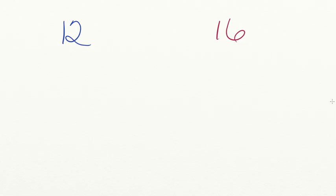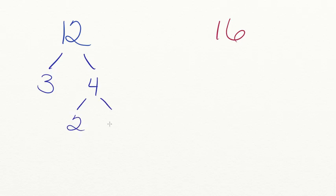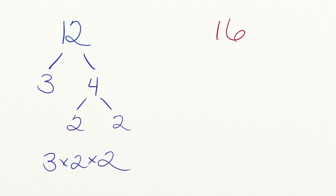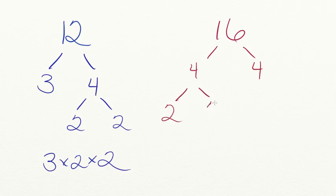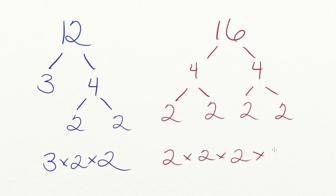Let's start with the number twelve. We know that we can multiply three times four to equal twelve. But four isn't a prime number, so we're going to break it down further to two times two. So three times two times two equals twelve — that's the prime factorization for twelve. Now for the number sixteen, four times four equals sixteen. Since four isn't a prime number, we break it down to two times two. So the prime factorization for sixteen is two times two times two times two.